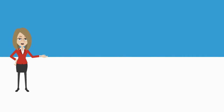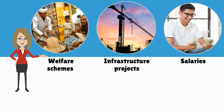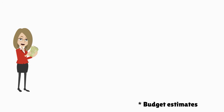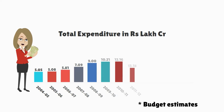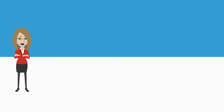The budget for 2016-17 will have to juggle between making more resources available for welfare schemes, infrastructure projects, and also salaries. Total expenditure, or the size of the annual budget, is the amount of money that the government spends during the year. Over the years, the government's annual spend has risen sharply, reflecting the growing size of the economy.